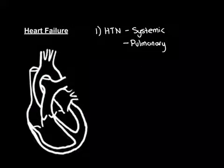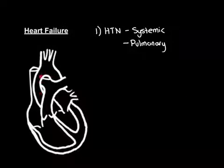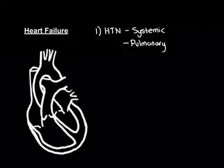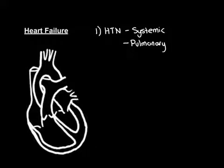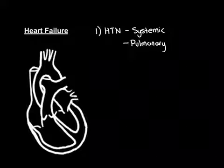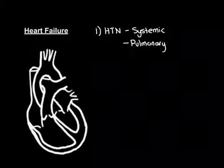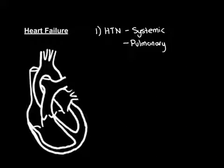Essential hypertension means that for reasons science still does not properly understand, the pressure in the systemic arterial system is too high. This happens in a lot of people as they get older. In particular, if you are overweight or if you smoke, you are particularly at risk. Some people will have really horrifically high pressures — blood pressures can sometimes be twice the pressure of a young healthy person's systemic arterial system.